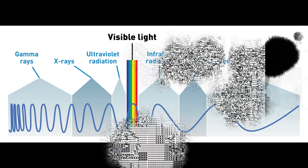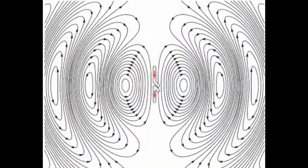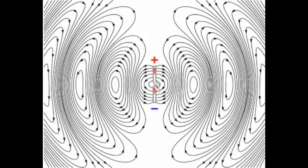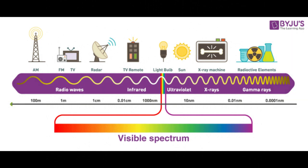For example, radio waves can penetrate through walls much easier than visible light because they have a longer wavelength and lower frequency, which means they can pass through small gaps in the wall structure. However, visible light has a shorter wavelength and higher frequency, making it more easily absorbed and reflected by solid materials.